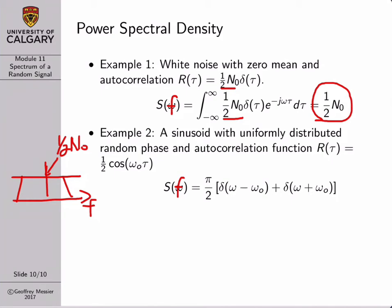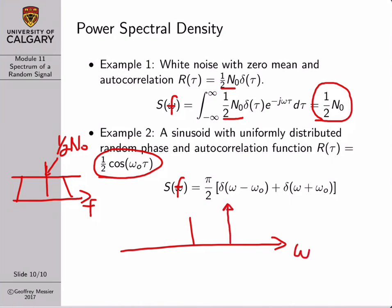The second example is a sinusoid with uniformly distributed random phase. We found a couple of modules ago that its autocorrelation function is (1/2)cos(ω₀τ). The Fourier transform of a cosine comes straight from the Fourier transform tables and equals two shifted delta functions: one centered at the positive oscillation frequency +ω₀ and one at the negative oscillation frequency −ω₀. This is satisfying because the Fourier transform of a deterministic cosine wave is just two shifted delta functions, and we find all the power of the cosine wave concentrated at its frequency of oscillation.